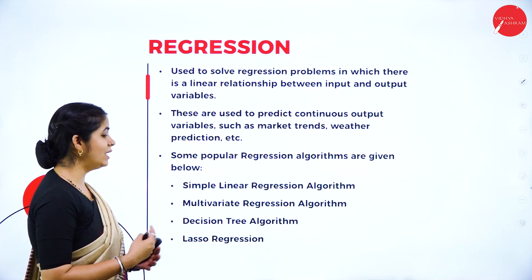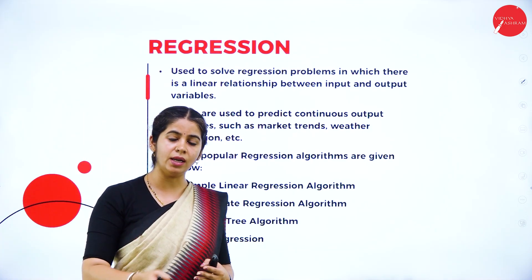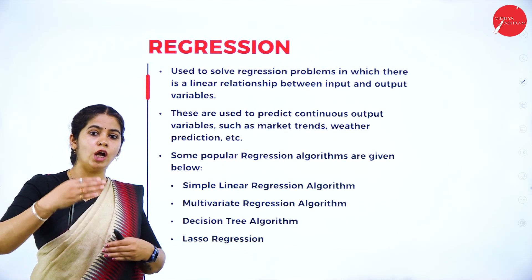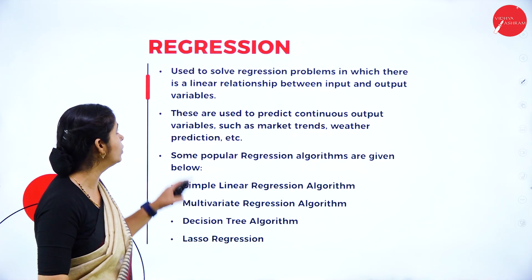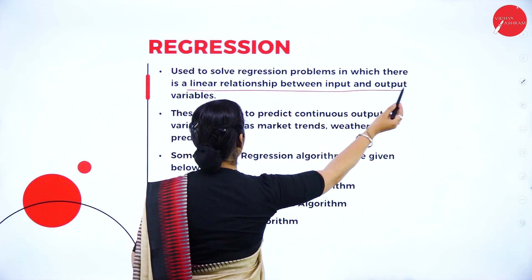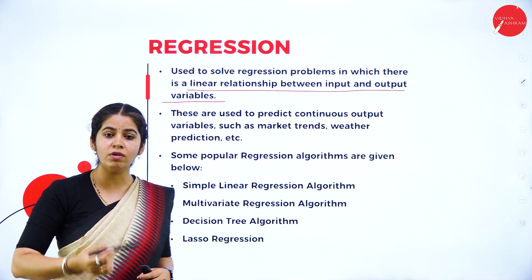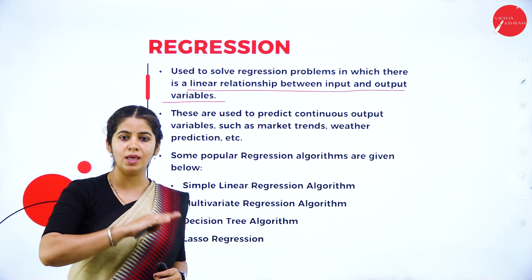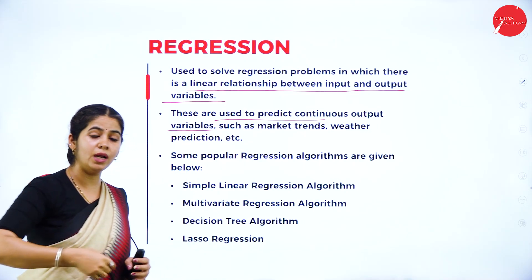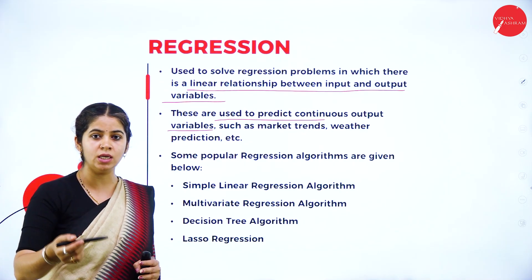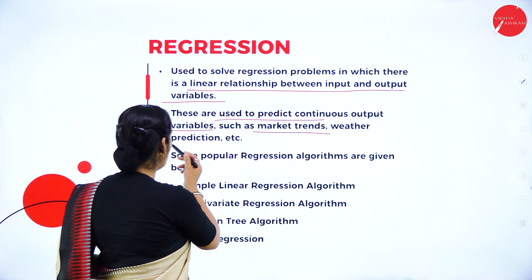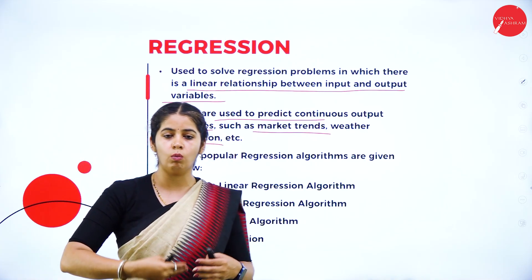The second form is regression. In classification we have a clear yes or no, but in regression we have a continuous input and a continuous output. Regression is used to solve problems in which there is a linear relationship between the input and the output variable. These are used to predict a continuous output variable — we are continuously giving input and the output will keep changing depending on the predictions.